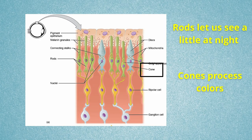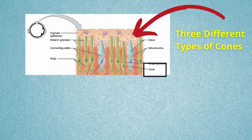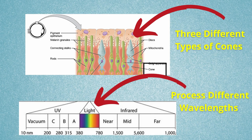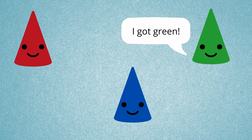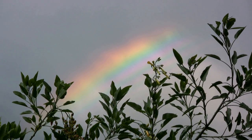Rods don't process colors — that's the job for cones. The human eye has over six million cones. There are three different types of cones in the human eye that can process different light waves in the visible light part of the electromagnetic spectrum. Each cone on its own can process one specific color: either red, blue, or green. But when they work in concert together, that's what allows us to see all the colors of the rainbow. So what allows some animals to see UV light but not others?